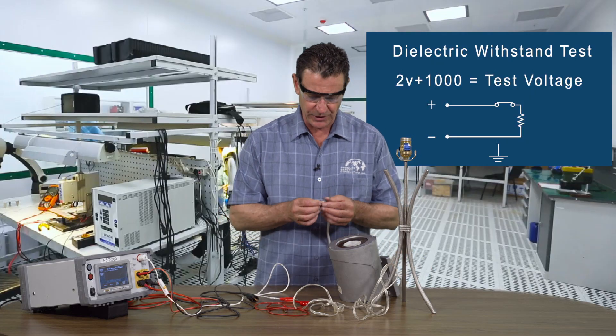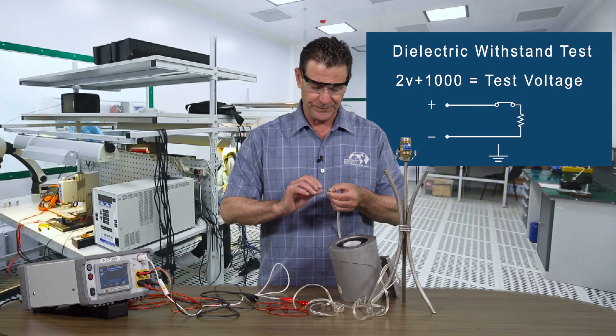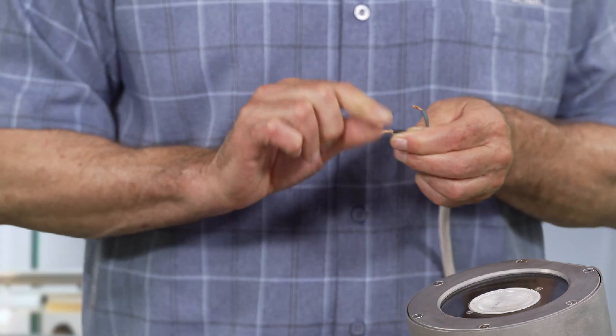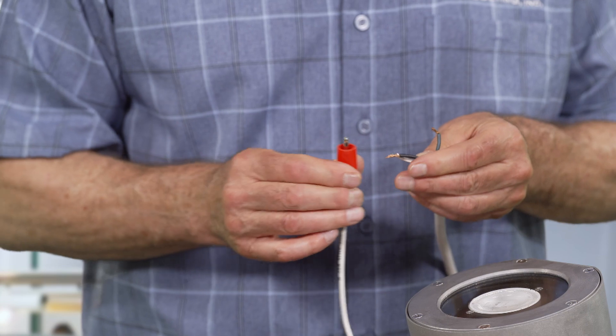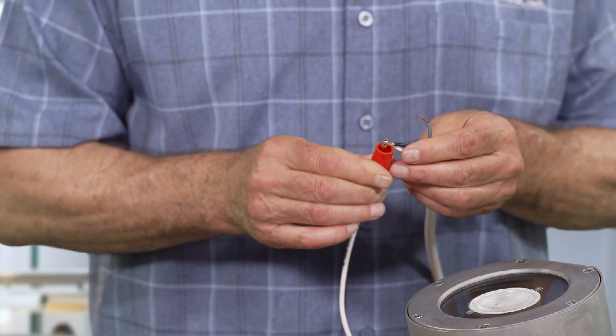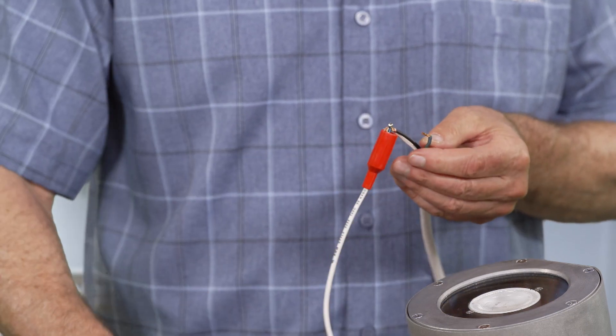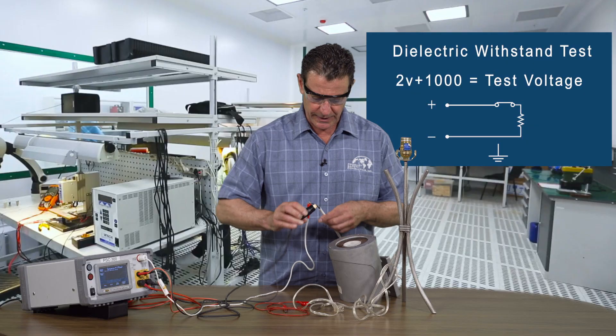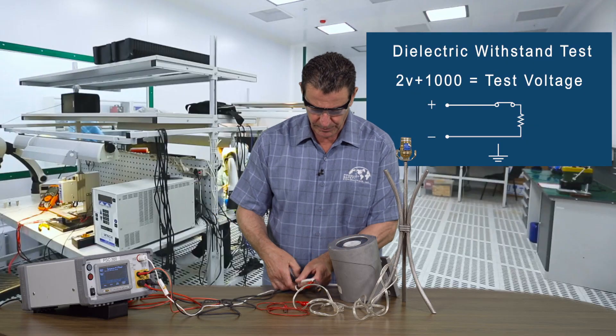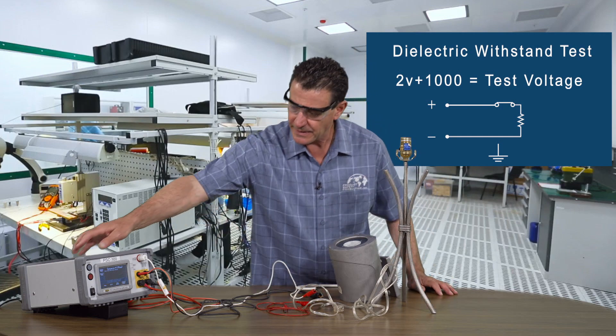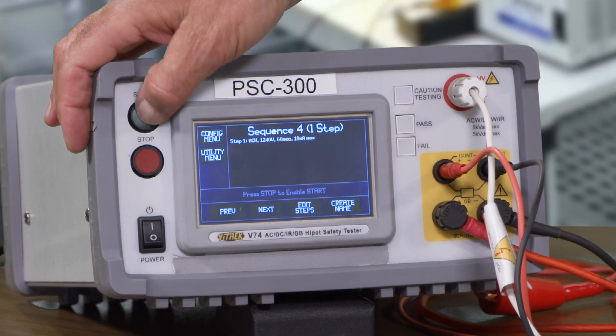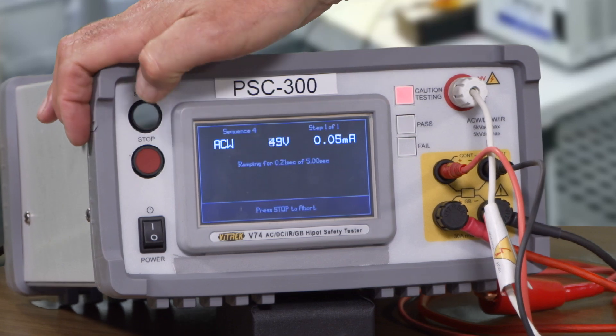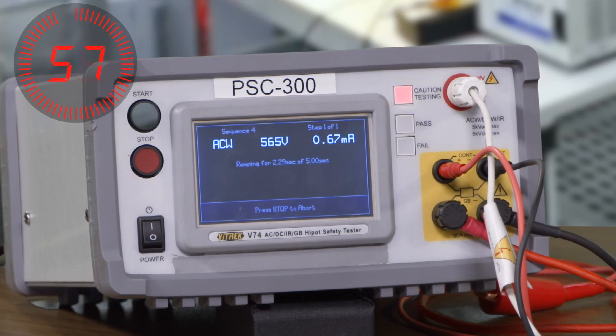So the insulation system test dielectric test as indicated we're going to tie line and neutral together. We're going to put the hot lead of the machine on that node and then we're going to take the return lead and put it on ground and I am not going to hold this. Remember it's 1200 volts. The test is actually 60 seconds and off it go.